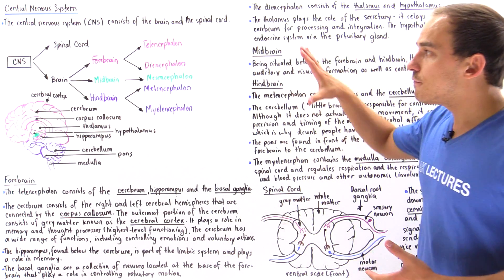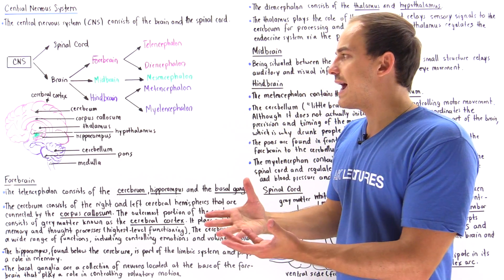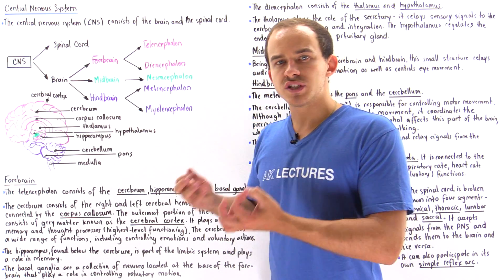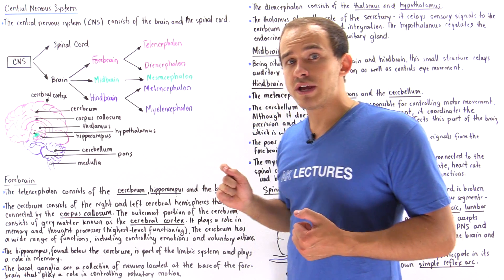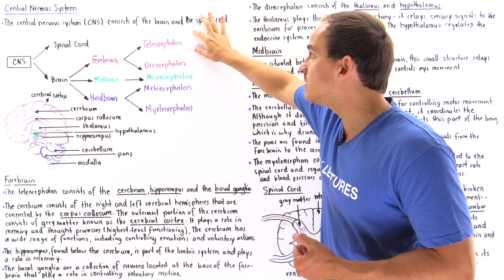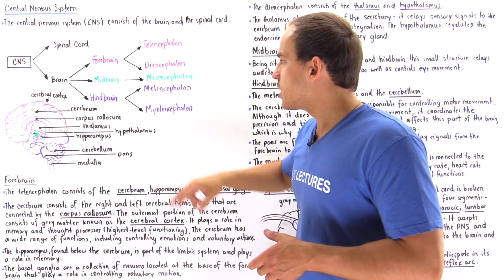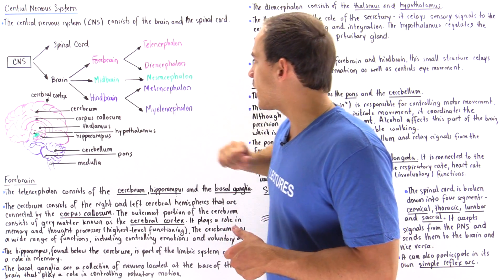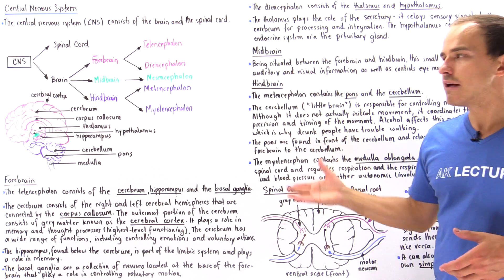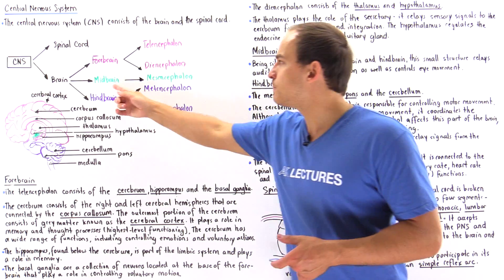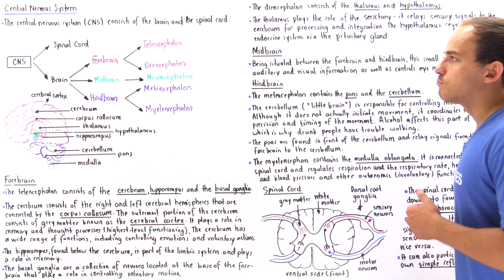The forebrain and the hindbrain can each be broken down into two subdivisions. For the forebrain, we have the telencephalon and diencephalon regions. For the hindbrain, we have the metencephalon and the myelencephalon. The midbrain consists of the mesencephalon.